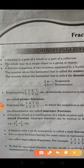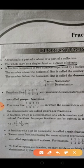The second point is that the whole may be a single object or a group of objects — for example, one piece or a group of objects like 3, 4, or 5.